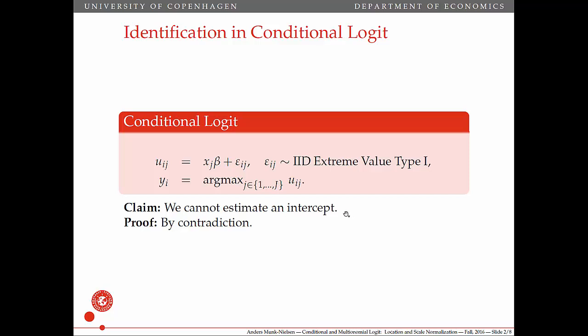And I claimed that we cannot estimate an intercept. I'm going to prove this mathematically. What I said at the lecture was that, as you can see, there's just this one common utility term. So if we add a constant term here, beta naught, then we're going to increase all of the utilities by the exact same number, and it's going to leave the ordering unchanged. And since the only outcome we observe is why the person chose, this cannot be identified. We cannot distinguish between different intercepts.